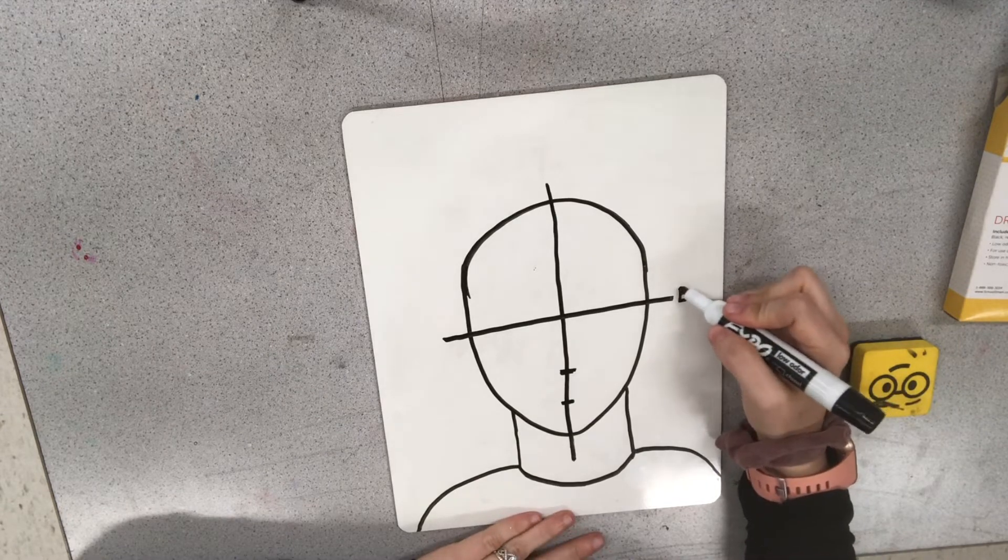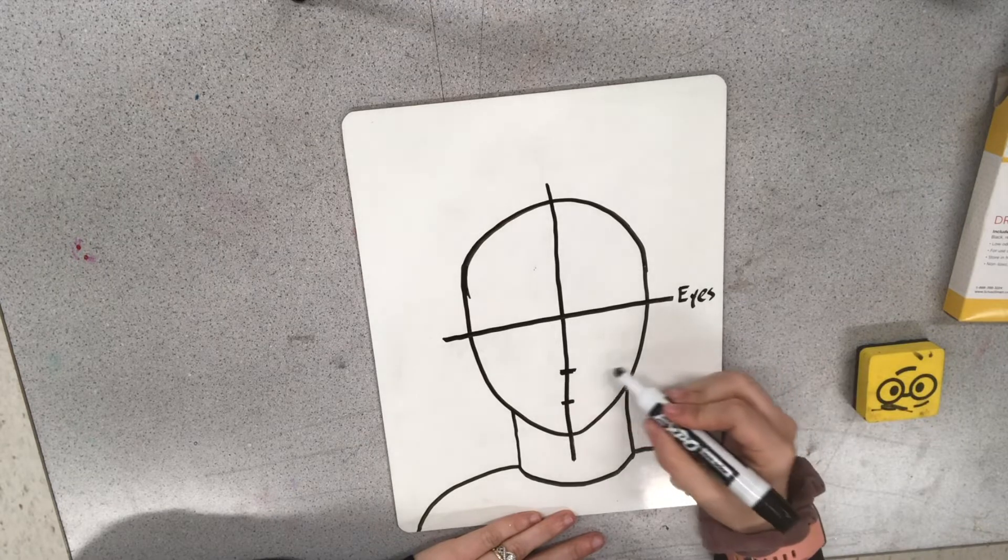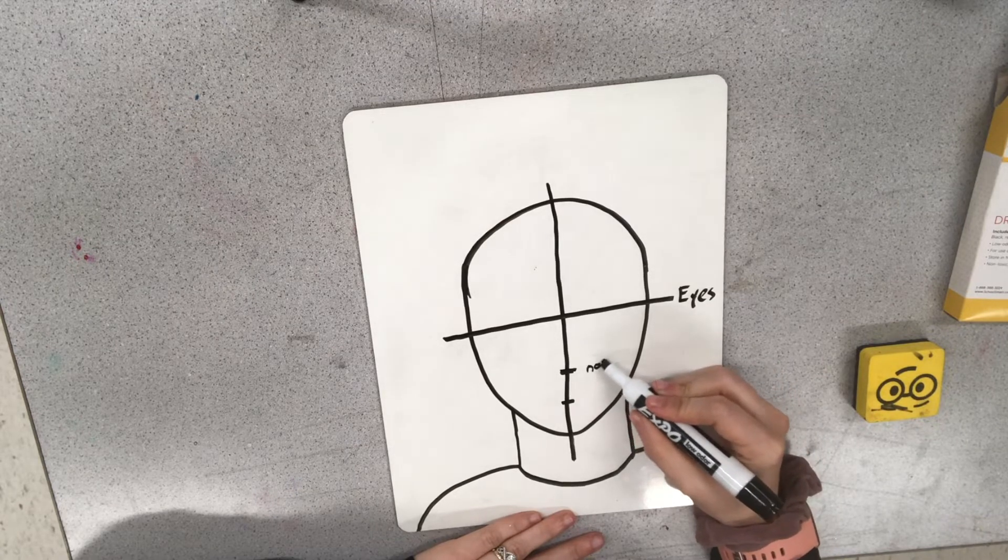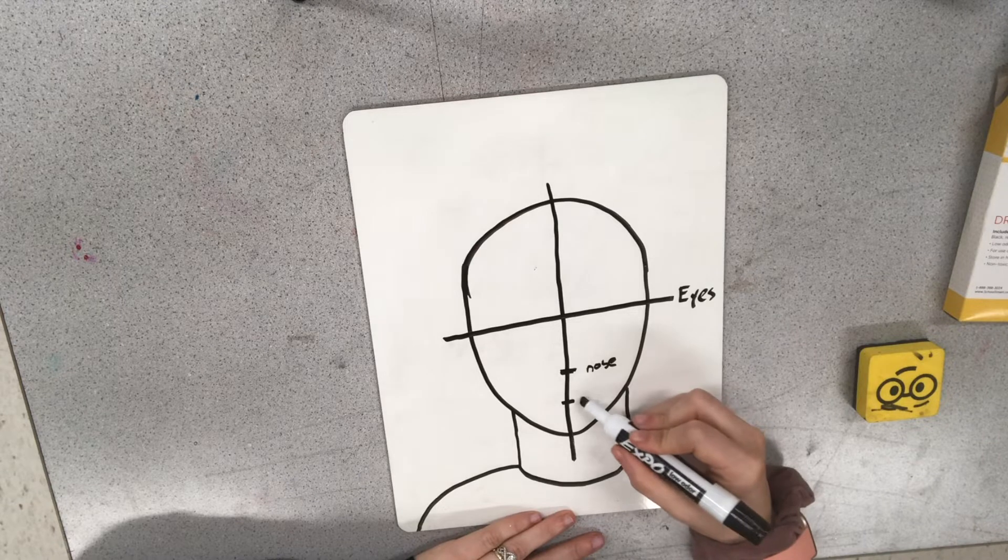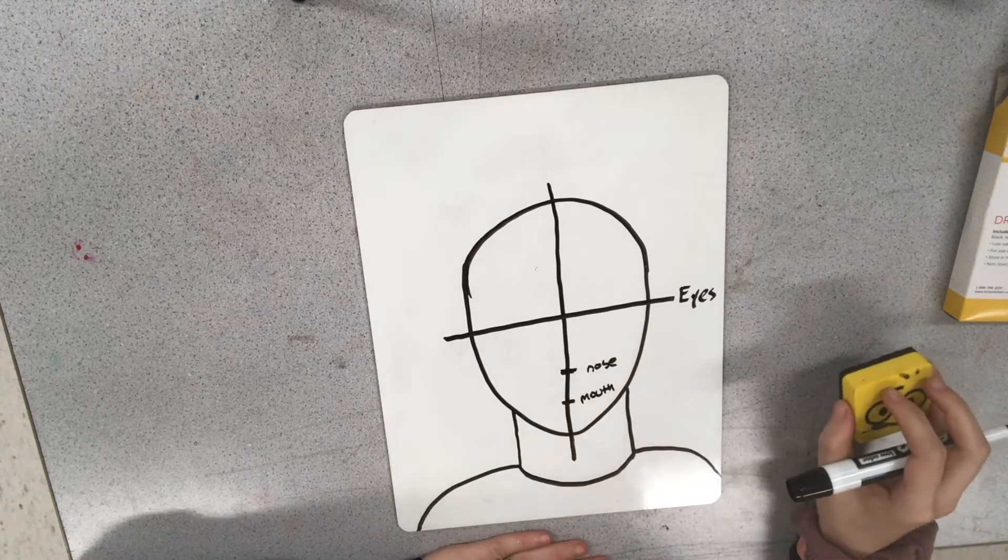Now this line is going to be our eyes. You don't have to write this. This is just to show you. This line that we made right here is going to be the nose and then this line here will be the mouth. So that's just showing us where everything is going to go.